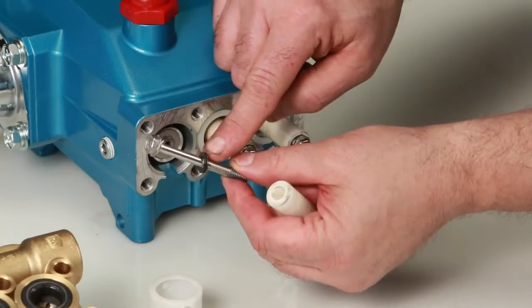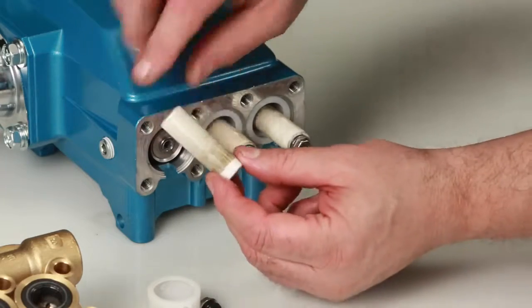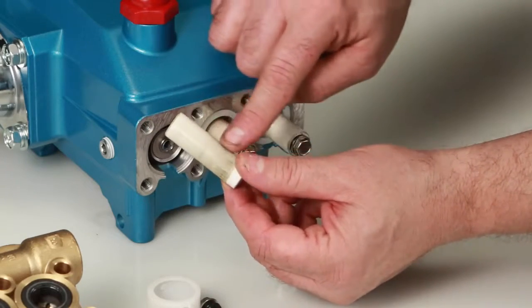Inspect the plunger retainer gasket for nicks or tears. Then inspect the ceramic plunger for cracks or scoring to the surface.